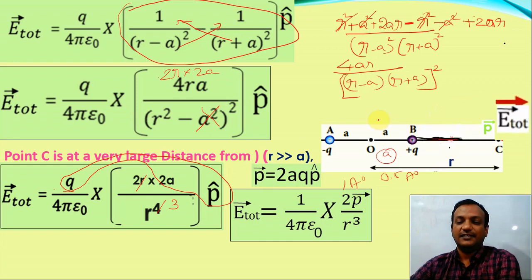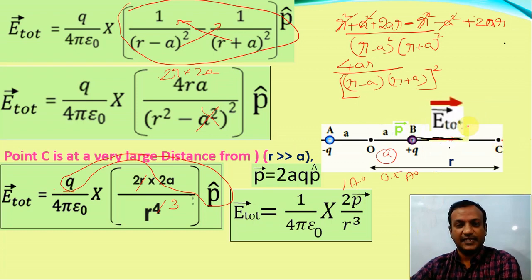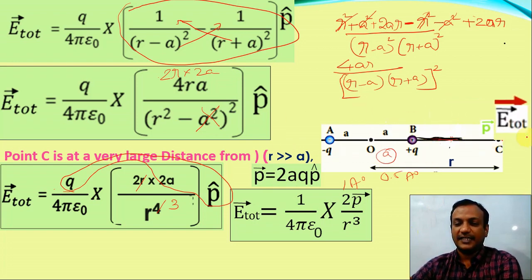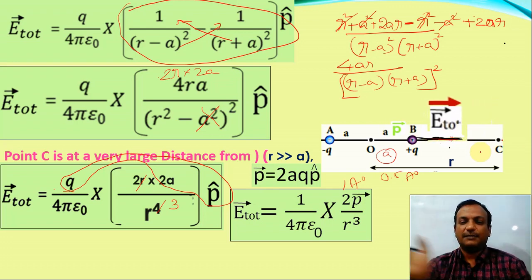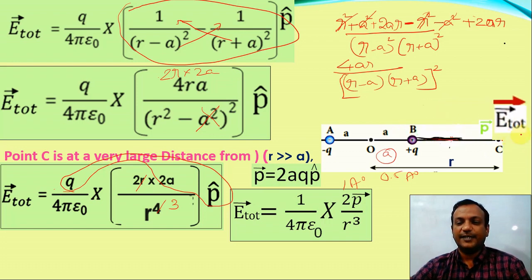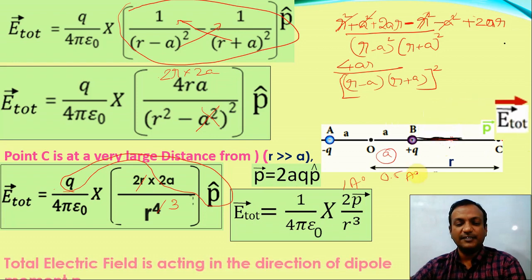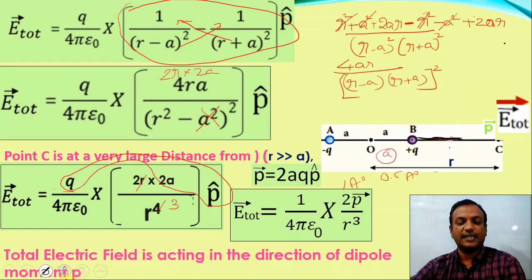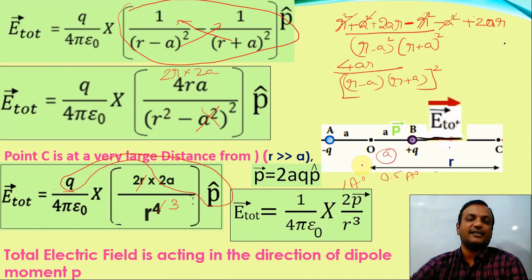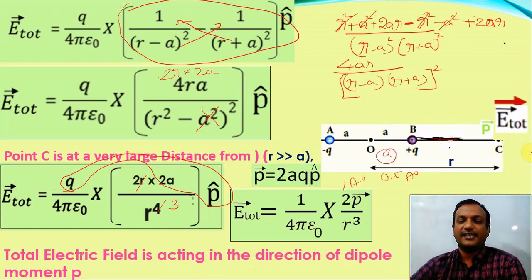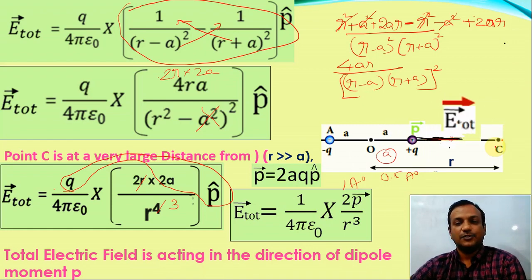So the total electric field at point C due to the entire dipole is E total. The total electric field is acting in the direction of the dipole moment P. This is important — the field on the axial line acts in the direction of the dipole moment P-cap.